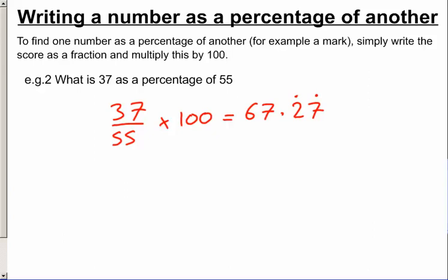But for most cases, that's fine to write that as 67.3%. And that's to one decimal place, or three significant figures. Be careful, the question might specify which one you should use.